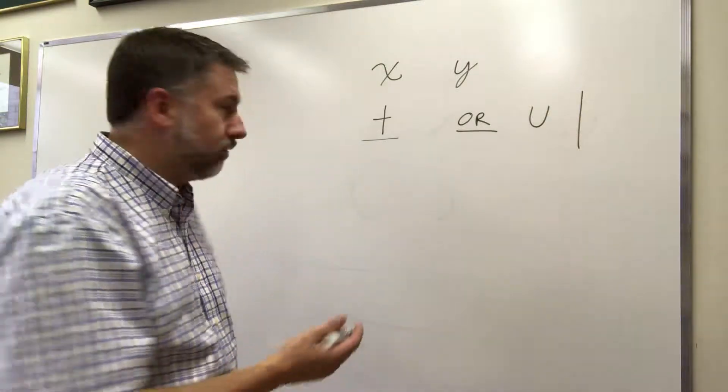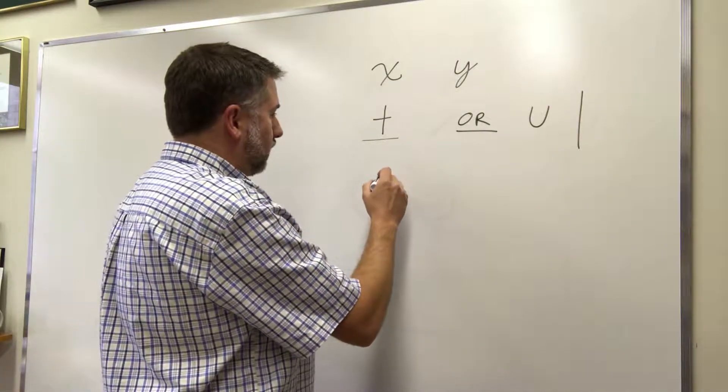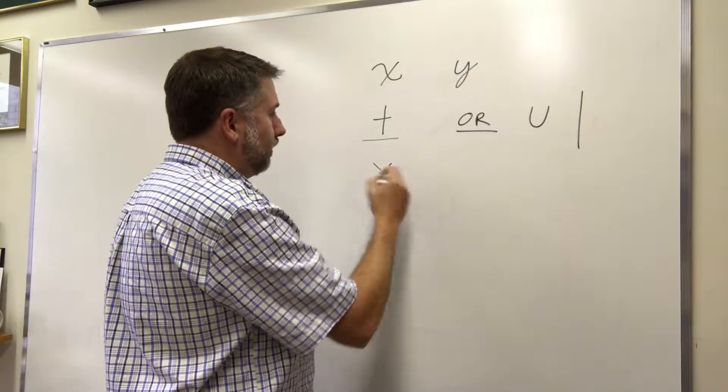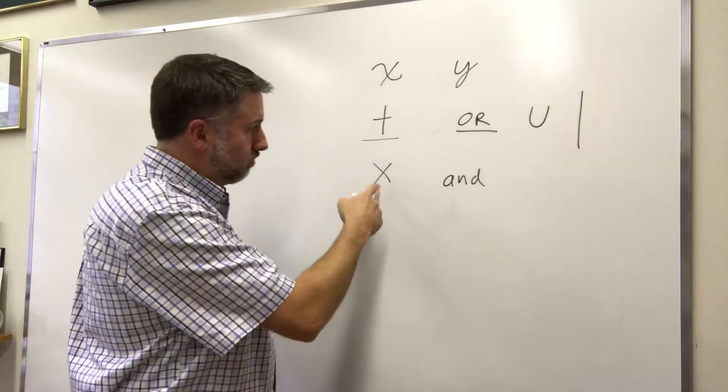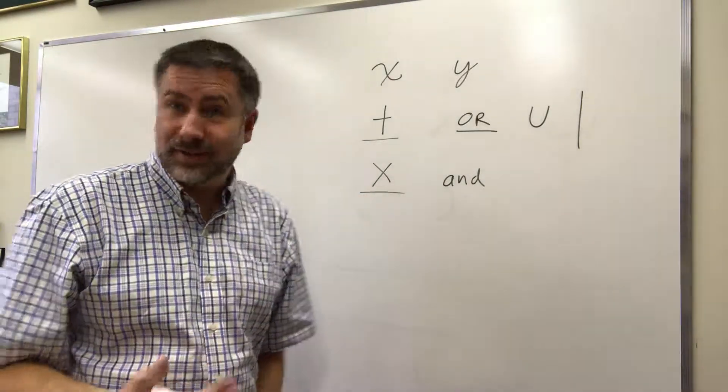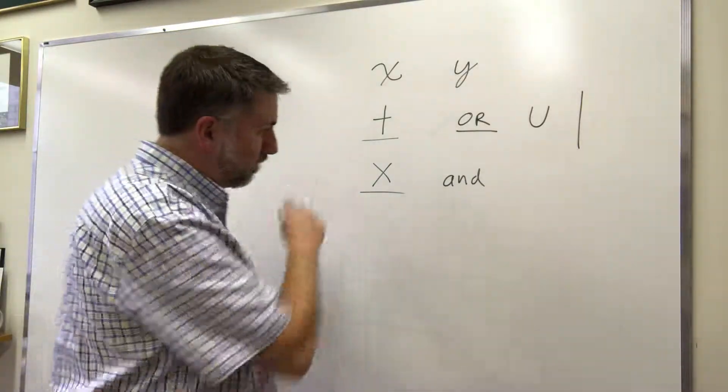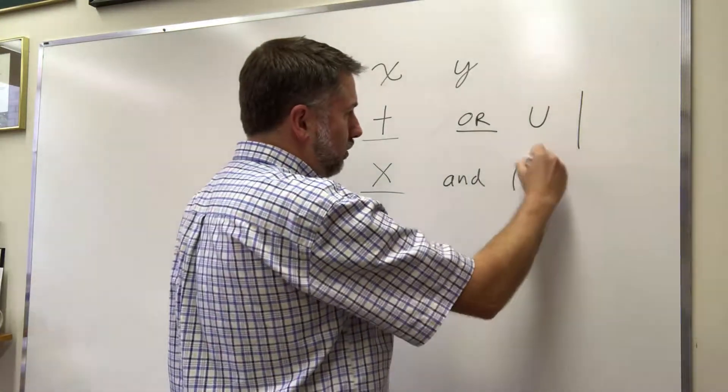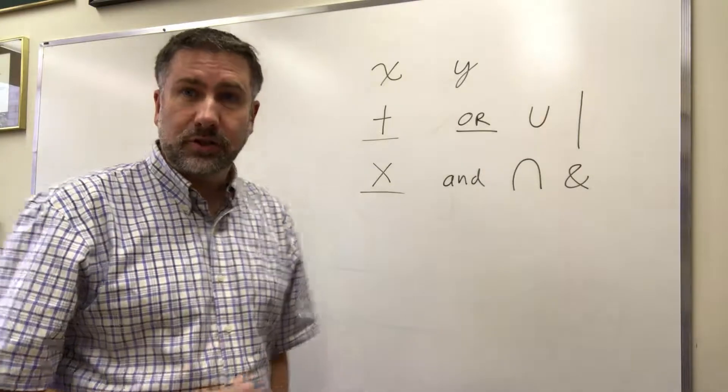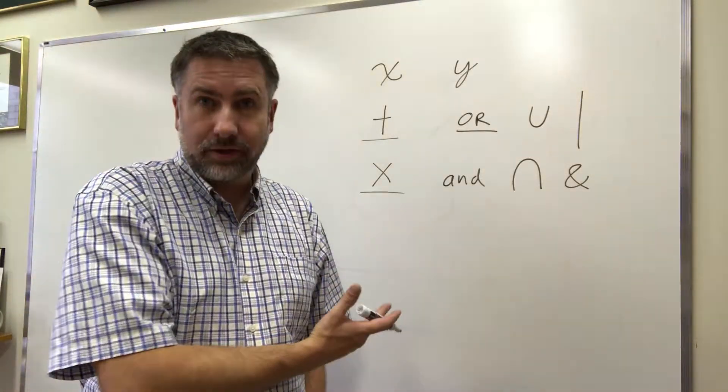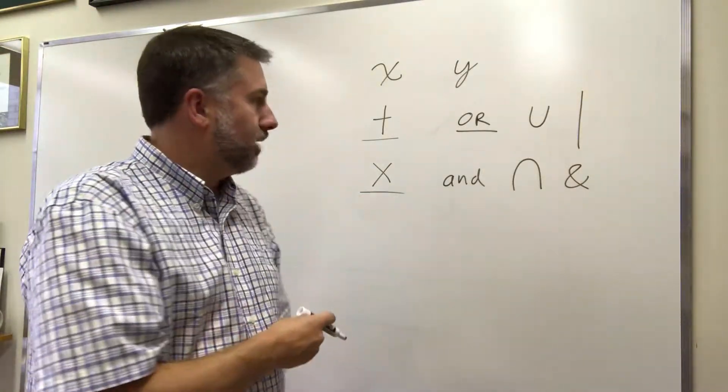The other operation that we often will use is an operation called AND, which we can use a multiplication symbol for. Again that's confusing because we look at that and we think multiplication, but we can use this symbol or we can use this symbol. There's other things that we can do to make it clear that we're using AND and OR instead of plus and multiply.